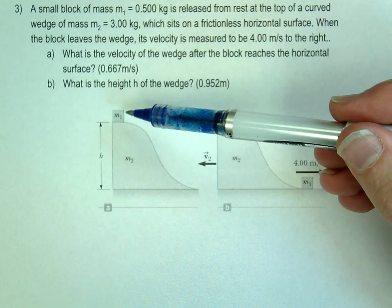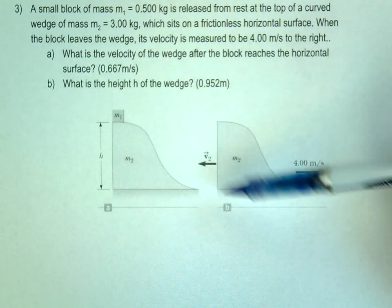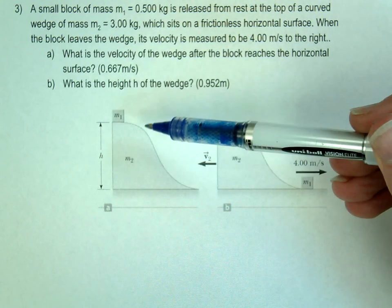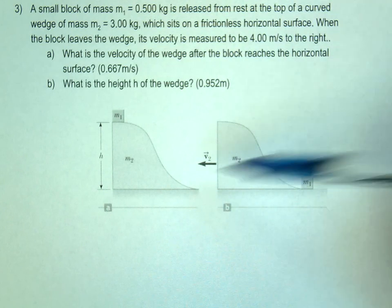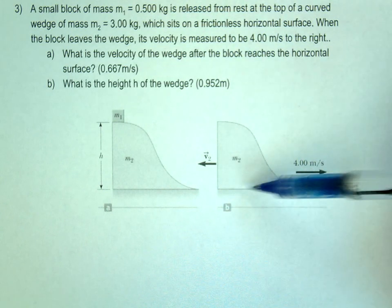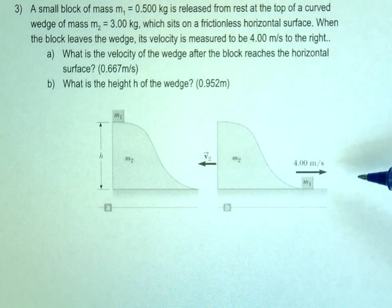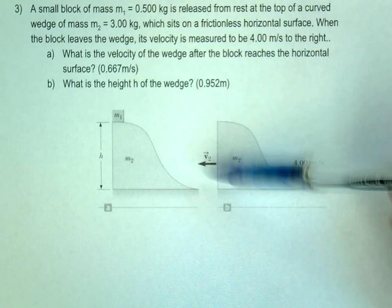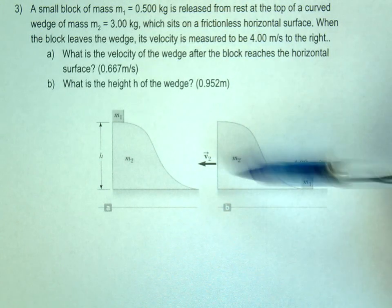Alright, so in this problem we have one mass that's going to be falling. As it falls, there's no friction between this ramp and the surface. So one mass is going to go one way, the other mass is going to go the other way. The first question is asking what's the velocity of this mass right here.